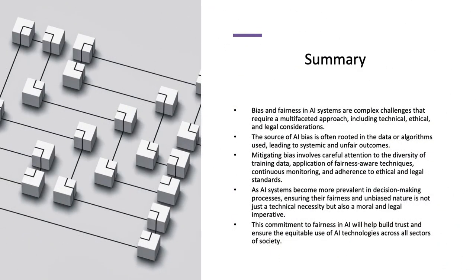In summary, bias and fairness in AI systems are complex challenges that require a multifaceted approach, including technical, ethical, and legal considerations. The source of AI bias is often rooted in data and algorithms used, leading to systemic and unfair outcomes. Mitigating bias involves careful attention to the diversity of training data, application of fairness-aware techniques, continuous monitoring, and adherence to ethical and legal standards. As AI systems become more prevalent in decision-making processes, ensuring their fairness and unbiased nature is not just a technical necessity, but also a moral and legal imperative. The commitment to fairness in AI will help build trust and ensure the equitable use of AI technologies across all sectors of society.